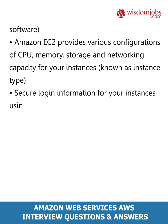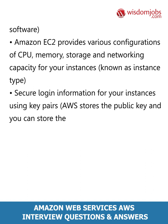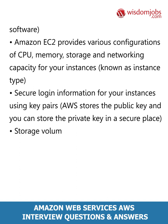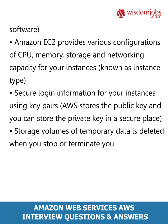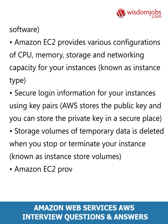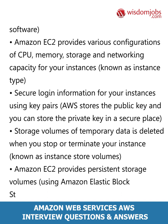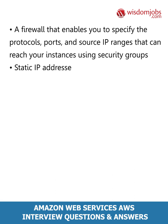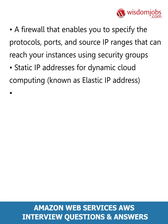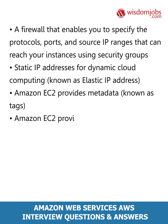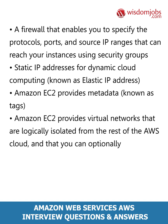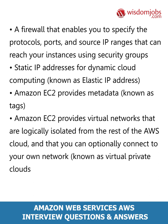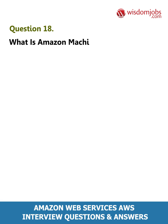Additional EC2 features include: secure login information for your instances using key pairs — AWS stores the public key and you store the private key in a secure place. Storage volumes of temporary data deleted when you stop or terminate your instance are known as instance store volumes. Amazon EC2 provides persistent storage volumes using Amazon Elastic Block Store (EBS). A firewall that enables you to specify protocols, ports, and source IP ranges using security groups. Static IP addresses for dynamic cloud computing known as elastic IP addresses. Amazon EC2 provides metadata known as tags, and virtual networks logically isolated from the AWS cloud, optionally connected to your own network, known as Virtual Private Clouds (VPCs).